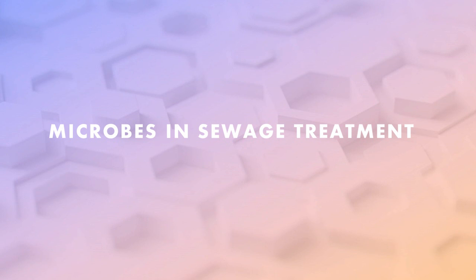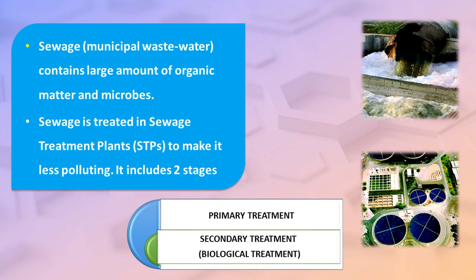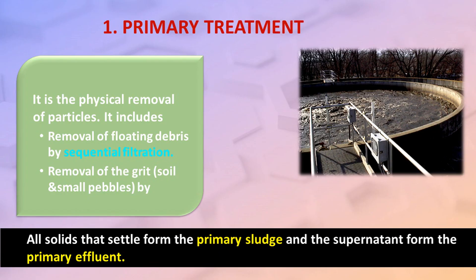Sewage contains large amounts of organic matter and microbes. Sewage is treated in sewage treatment plants to make it less polluting. It includes two stages: primary treatment and secondary treatment, which is the biological treatment. Primary treatment involves the physical removal of particles, including removal of floating debris by sequential filtration.